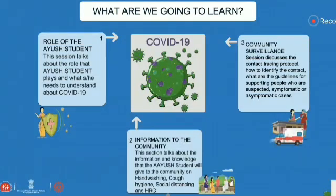The role of the Ayush student — what they need to do in the field very clearly and what role they will play when they are supporting interventions at the district level. Second, what information they are communicating to the areas they will be working in, especially related to prevention and control measures as Dr. Tanzan has also talked about — social distancing, home quarantine, etc. All that will also come in.